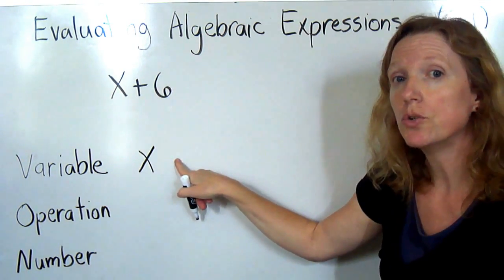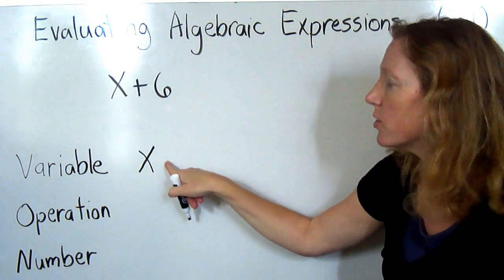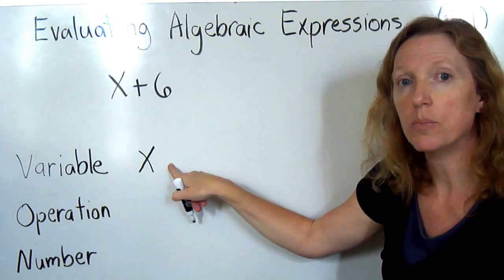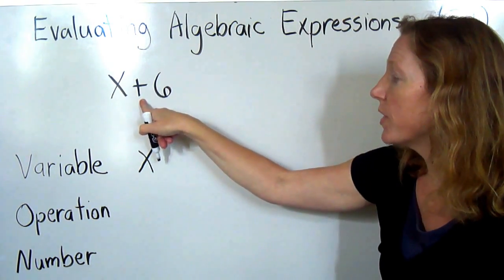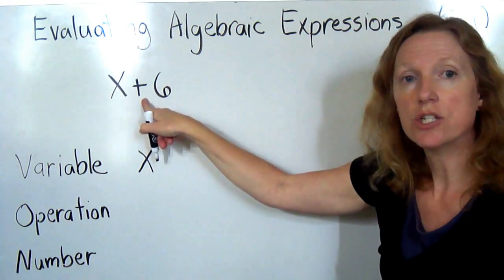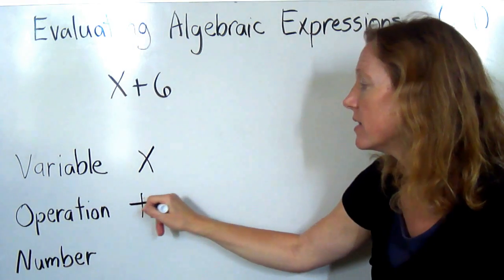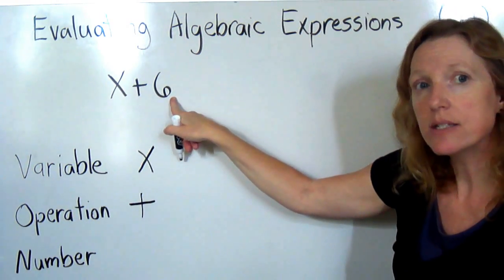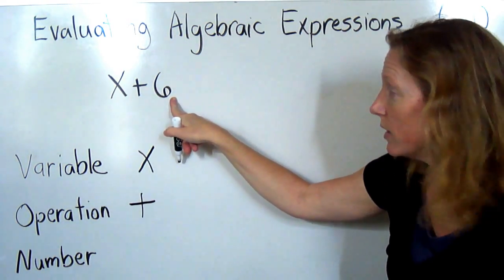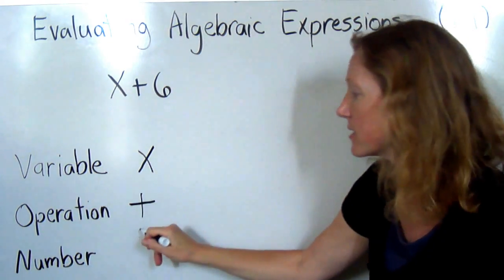It could be 1, it could be 2, it could be 10, it could be 100. It could represent different numbers. Operation is the addition sign, so we're adding in this expression. And the constant, the number which will not change in the expression, is the 6.